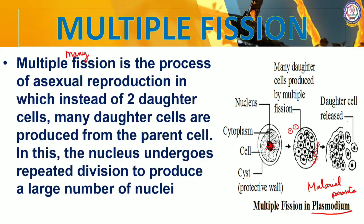Multiple fission is also a form of asexual reproduction. Instead of two daughter cells as in binary fission, many daughter cells are formed from the parent cell. The nucleus undergoes repeated division, forming a large number of nuclei, each of which eventually develops into a daughter cell.